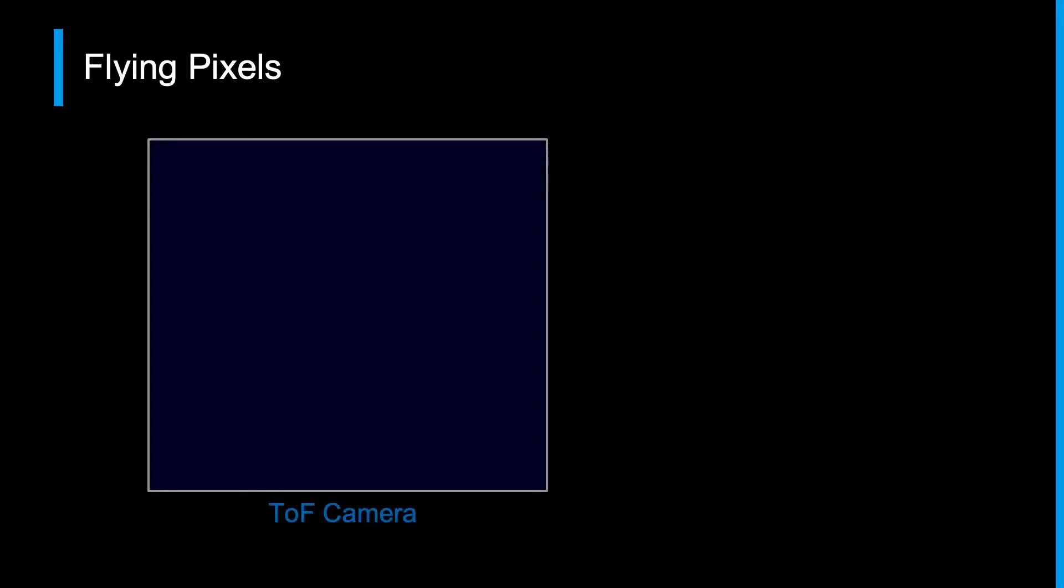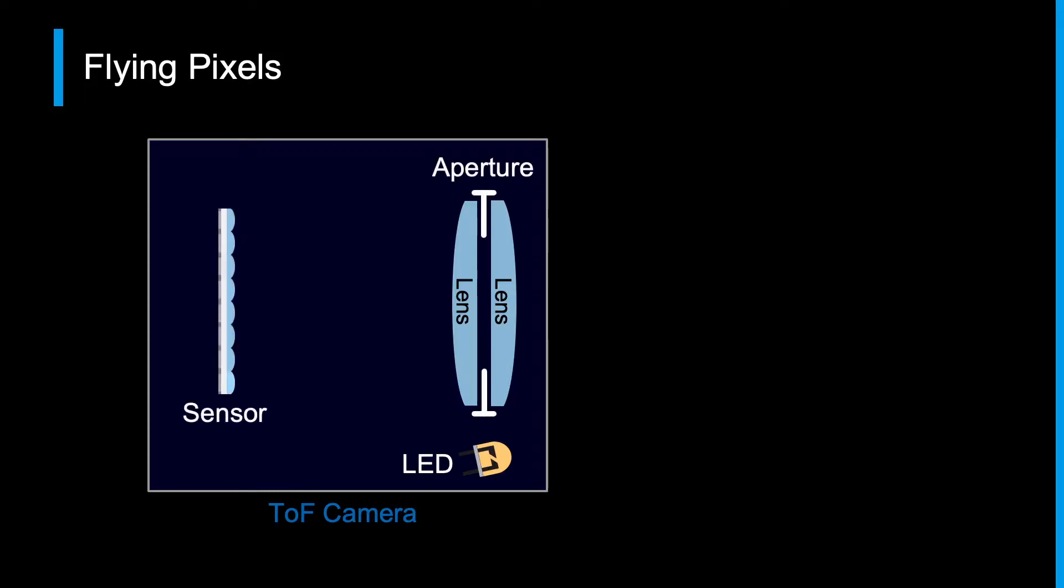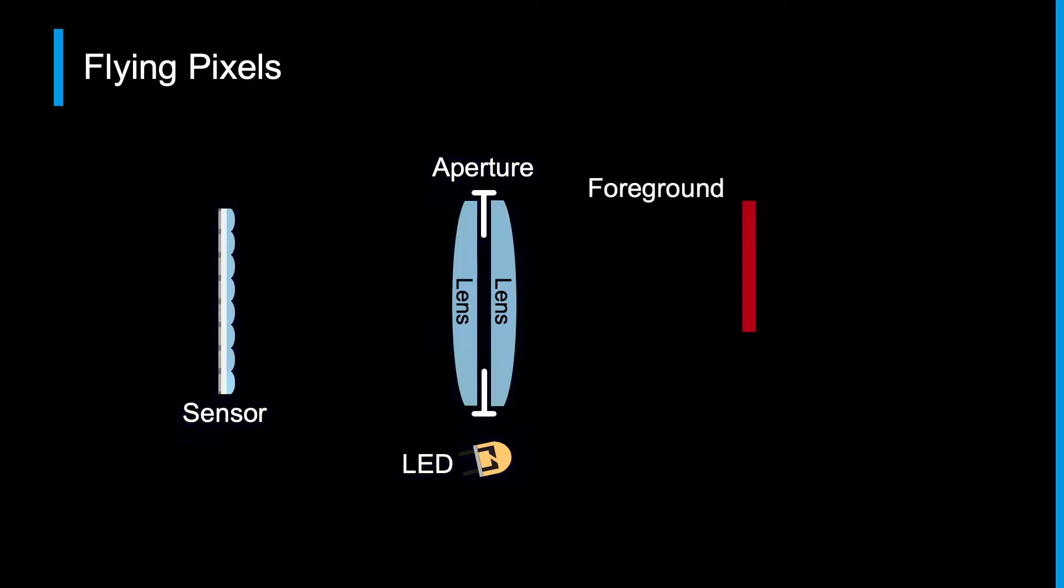This powerful imaging modality is not without fundamental problems, however. Let's look closer at our time-of-flight camera, which we broadly decompose into an illumination module, main lens, and camera aperture pair, and sensor array. What happens when we have two objects in the scene, one at a foreground depth and one at a background depth?